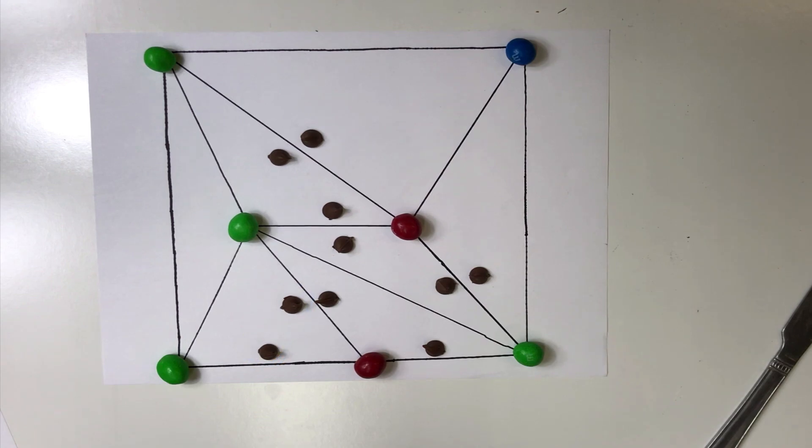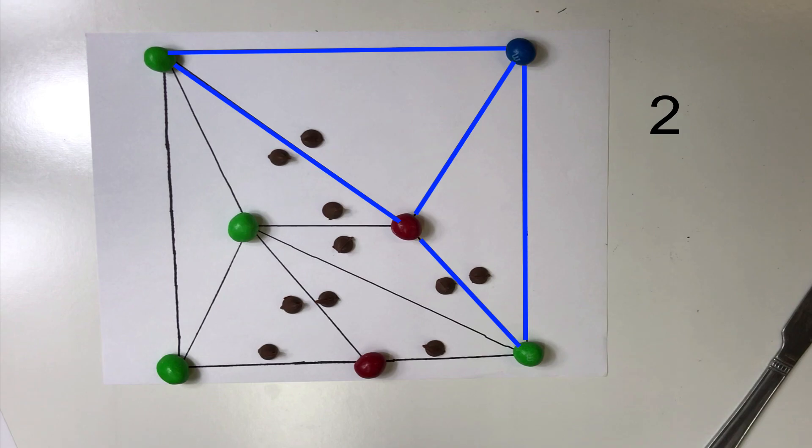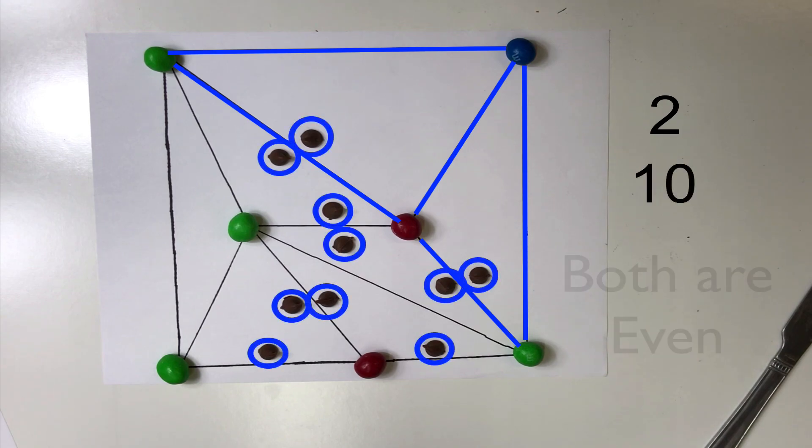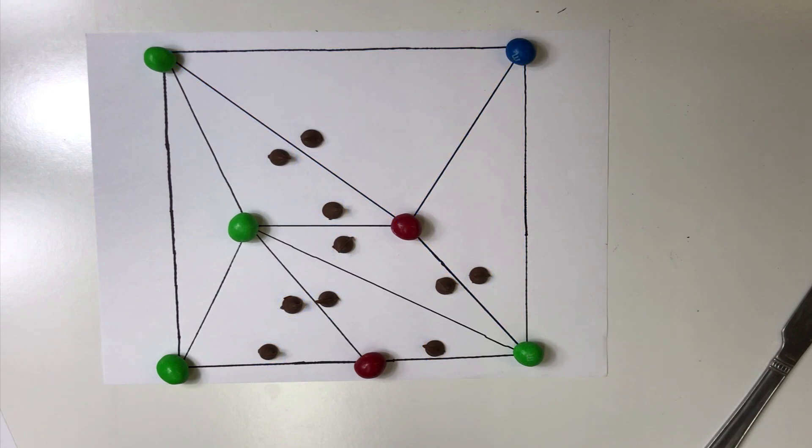The number of red-green-blue triangles and the number of total pebbles are also both even or both odd. From this, we see that the number of pebbles for the red-green perimeter edges and the number of pebbles for the red-green-blue triangles have the same parity.